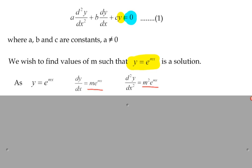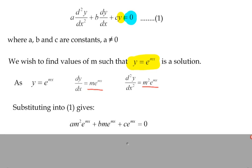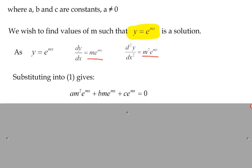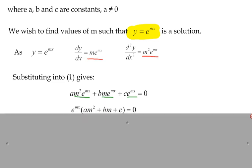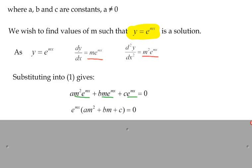If we substitute those derivatives into the original equation, we get: a·m²e^(mx) plus b·m·e^(mx) plus c·e^(mx) equals zero, where a, b, and c are our given coefficients. Notice there's a common factor of e^(mx) — that's the nice thing about differentiating exponential functions. Therefore, this equation must hold for a homogeneous differential equation: e^(mx) multiplied by the quadratic in m must give zero.